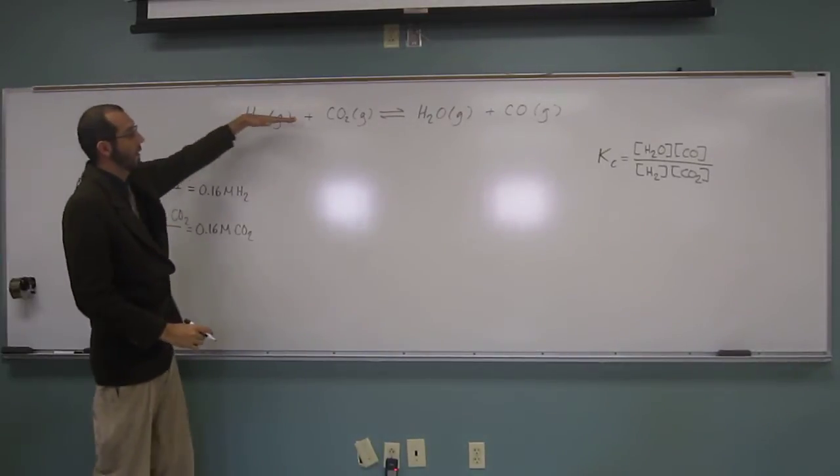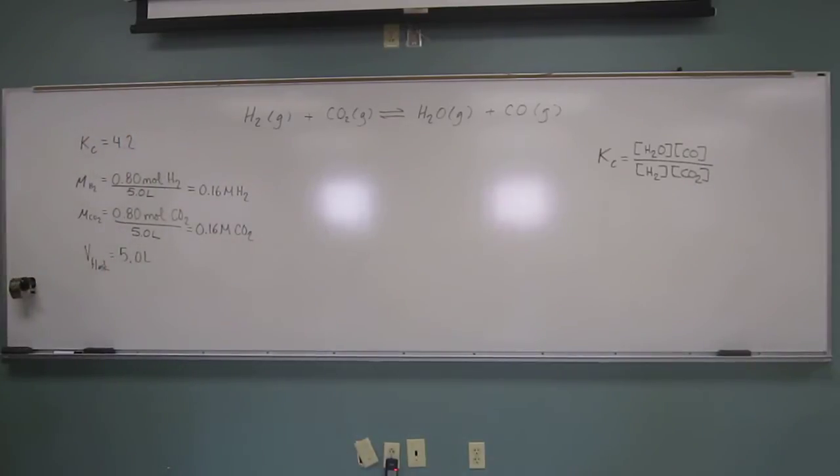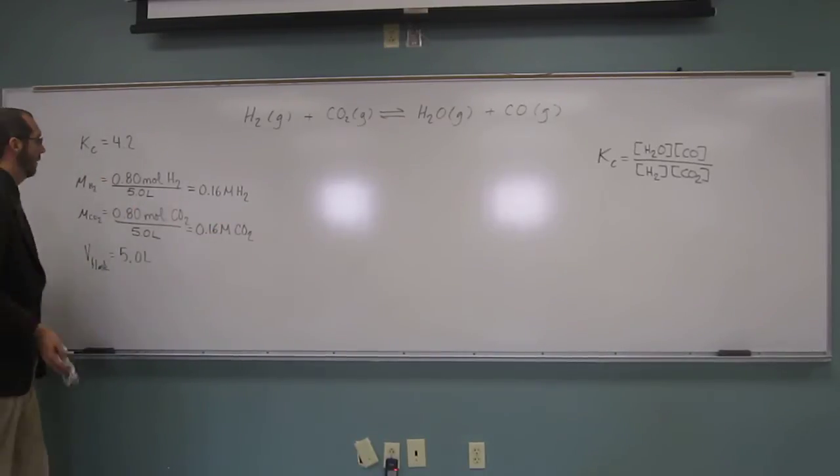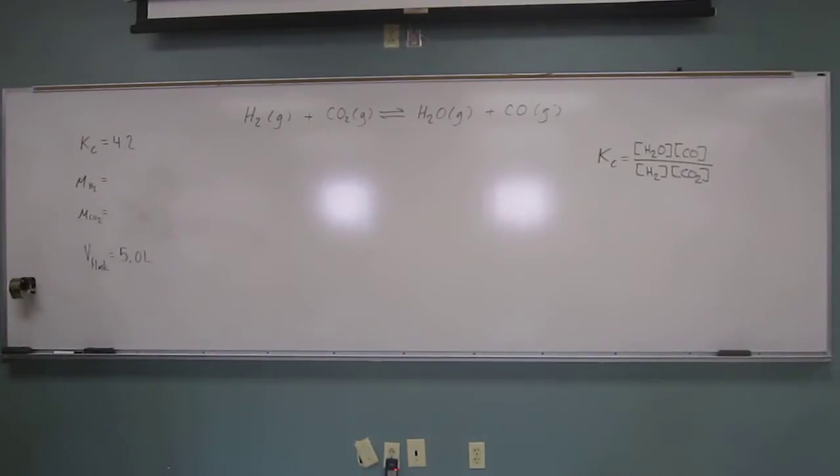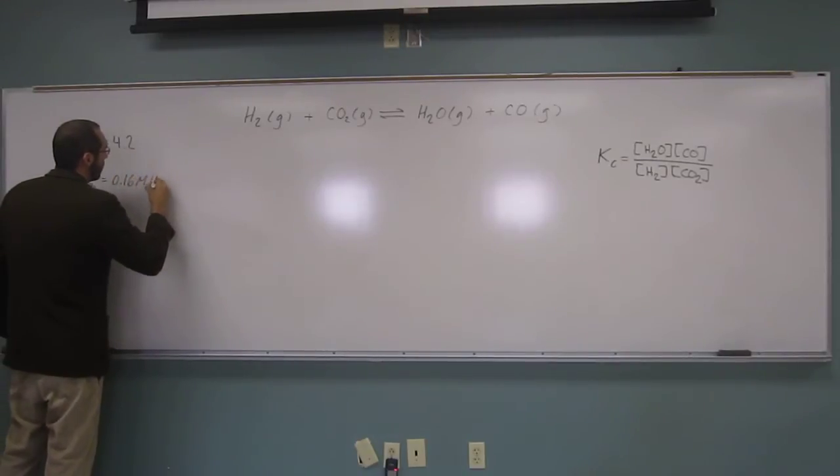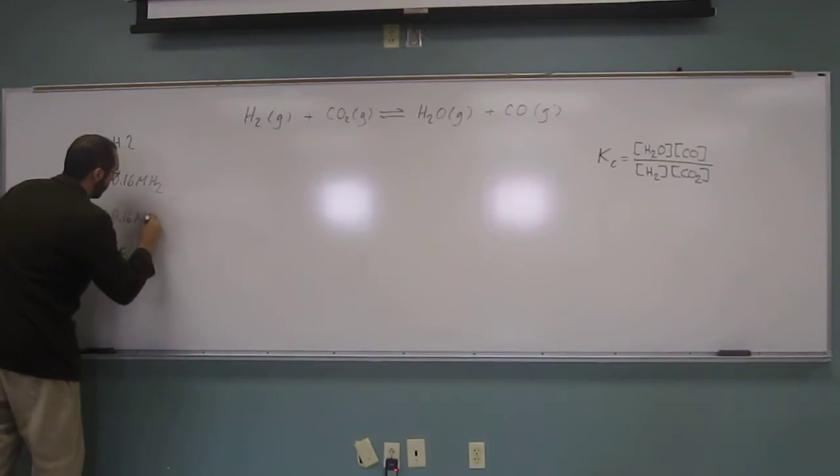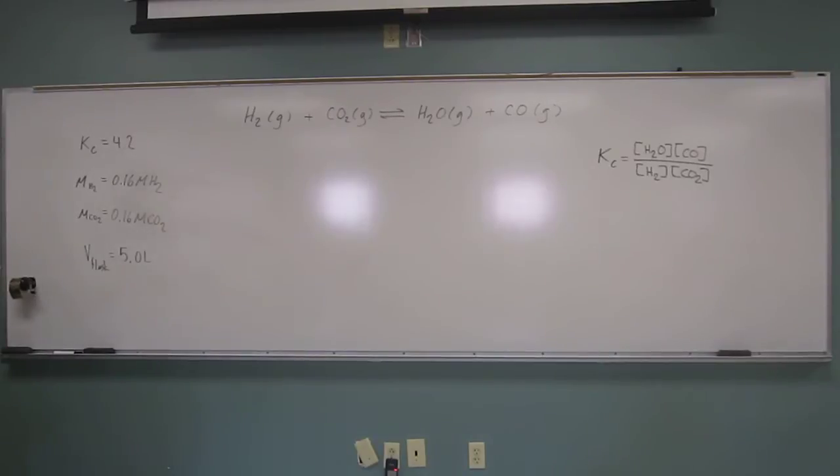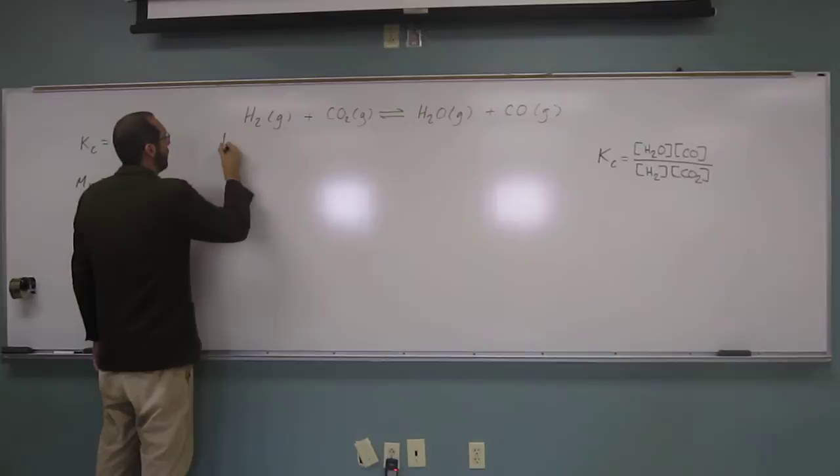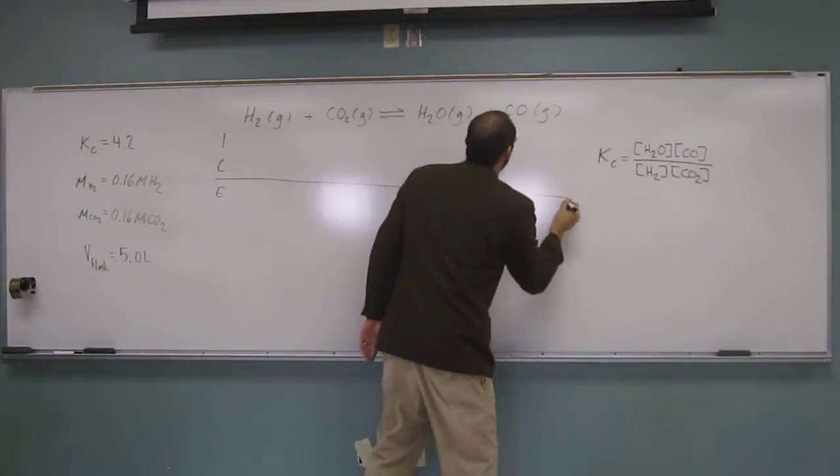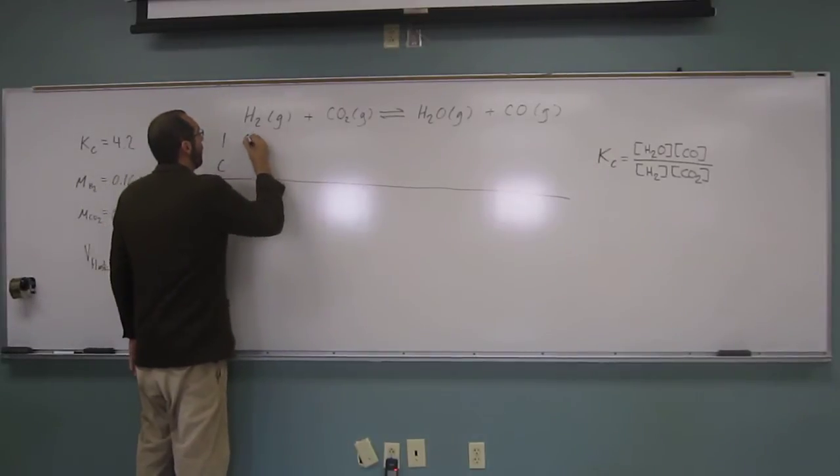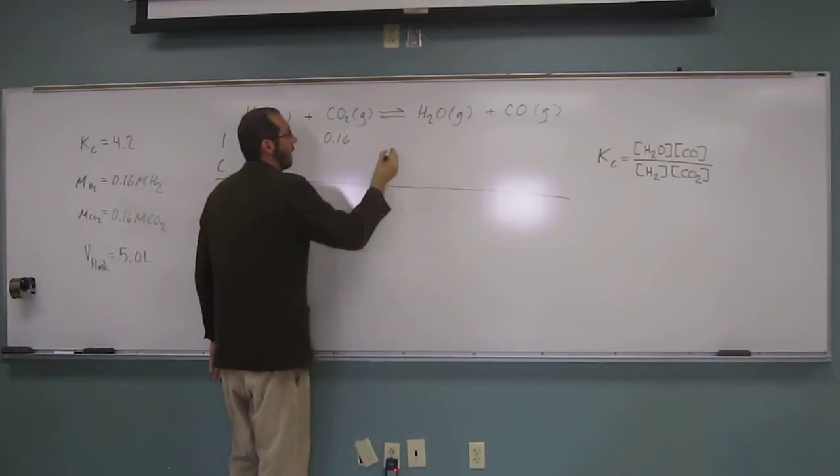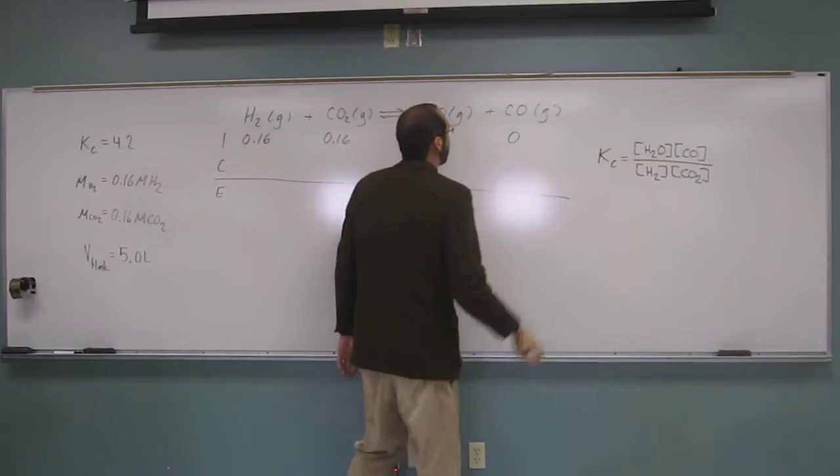So I'm actually going to need this middle piece, this room in the middle for writing an ice table, as you guys have predicted already. Would you mind if I erase this portion? Is everybody okay with that? Okay, so let's write our ice table. Initial, change, equilibrium. Okay, so it said we started out with only hydrogen gas and only carbon dioxide gas. So when we put those in, we're going to put 0.16 there, 0.16 there. So that means we didn't start in with any water and we didn't start with any carbon monoxide.